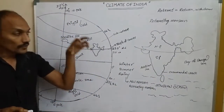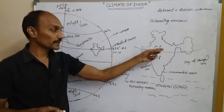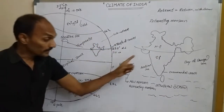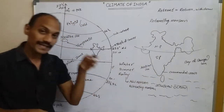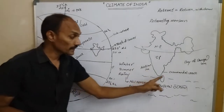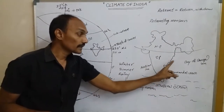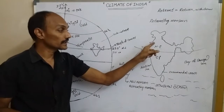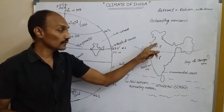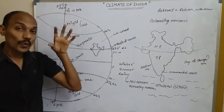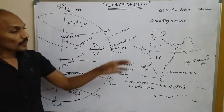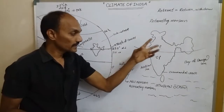In the northern part, especially during winter, the temperature drops below 10°C. But in the southern part it is not less than 20°C, because it has a coastal area. The northern part does not have a coastal area, so that's why we see extreme high or low temperatures there.